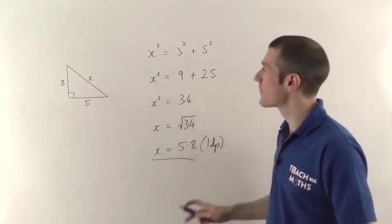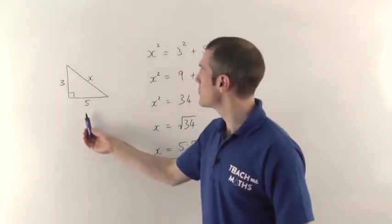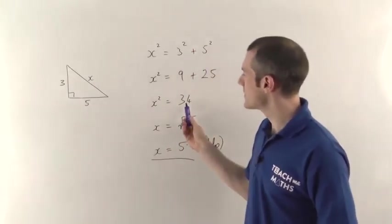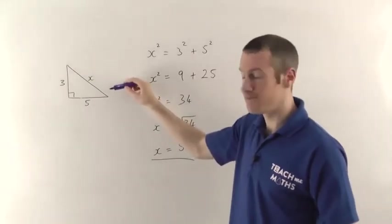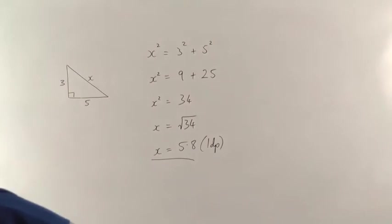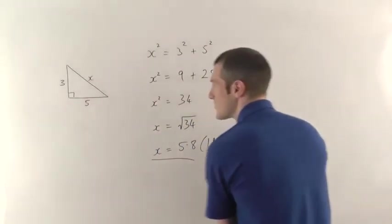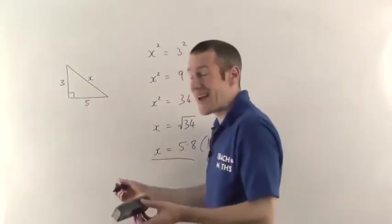So that's the general idea. Find out the areas of those two squares, you add them to get the area of the big square and then square root it to find the length on that side. Now that's all very well if they've given you the lengths on the two shorter sides, but what if they haven't?